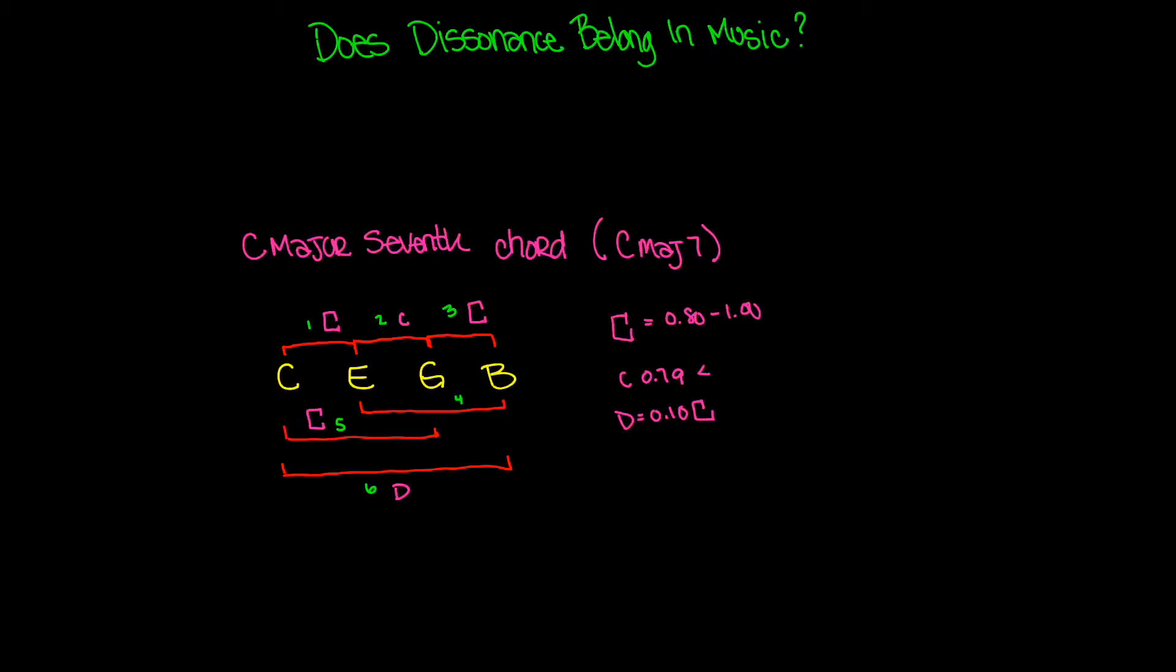Now, the way that I would analyze this at this point is we're going to do some math. So let's look at what we want to think of: we have one sixth, because there's six different intervals times the consonance of interval one, right? So we're going to say one sixth C1 plus one sixth C2 plus one sixth C3 plus one sixth C4 plus one sixth C5 plus one sixth C6. C1, C2, C3, C4, C5, C6 represent the different intervals.